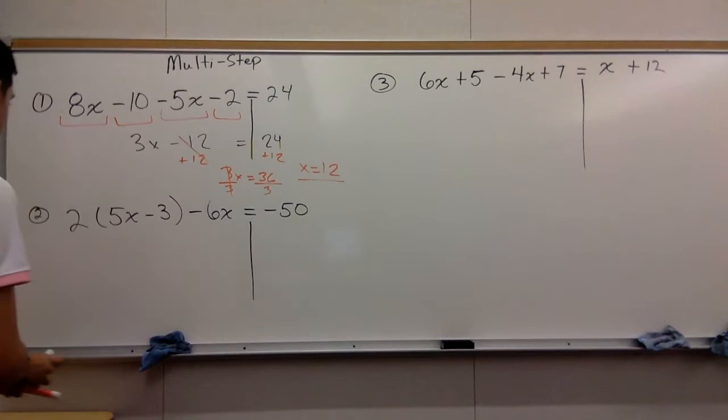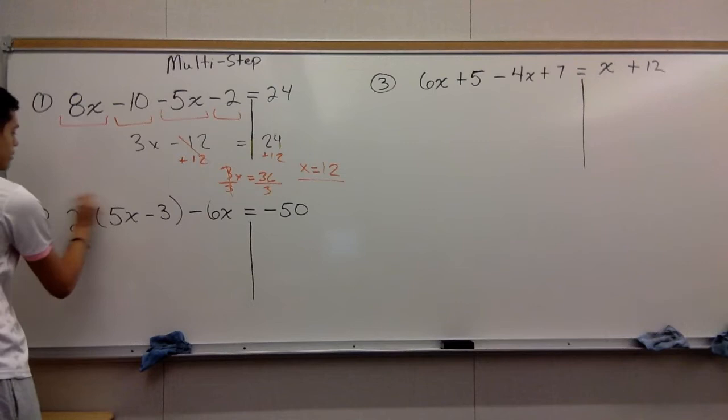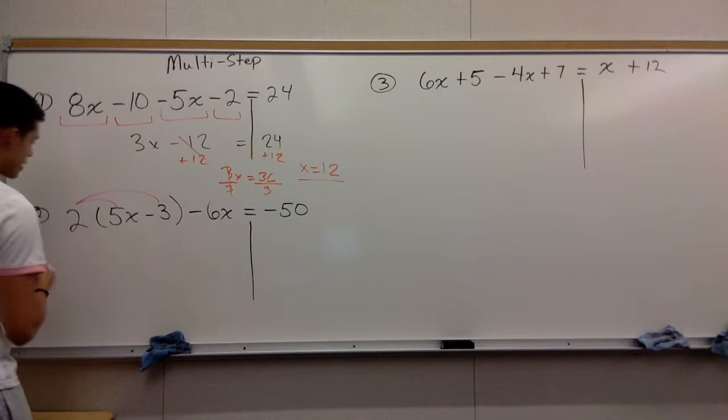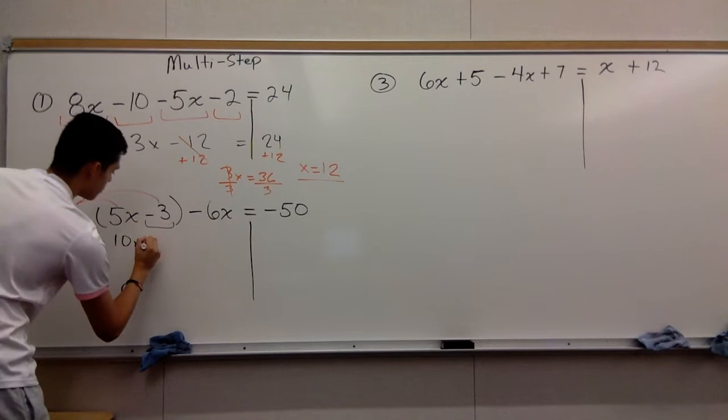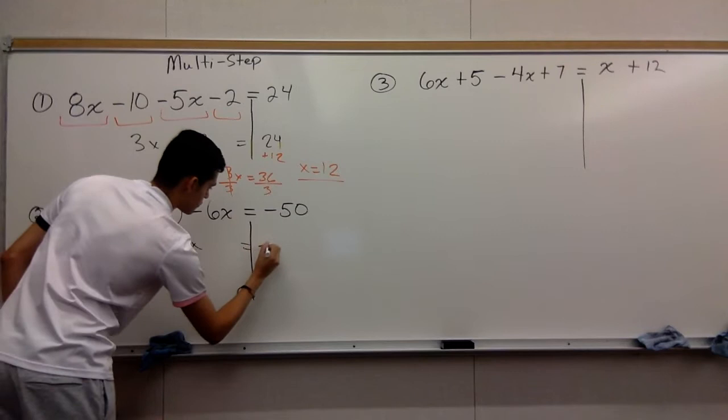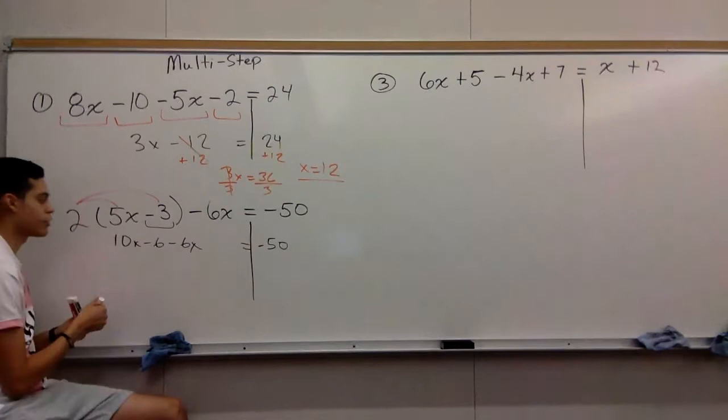Now for number two, we have to distribute this 2. This 2 distributes to both of them. Two times 5x gives you 10x. Two times negative 3 gives you negative 6. You bring down this negative 6x and rewrite the rest of the problem.